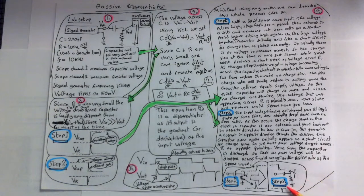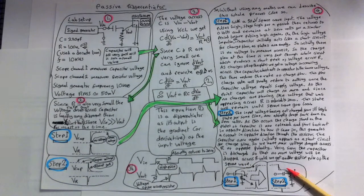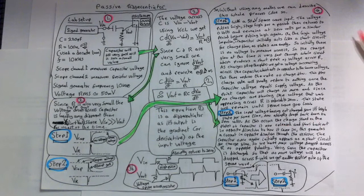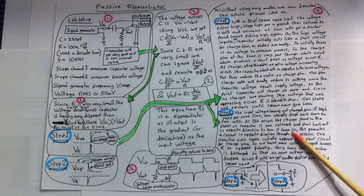Now step 2, the input voltage, having not changed from its high state for some time, now abruptly drops back down to 0 volts. As this occurs, the charge stored on the plates of the capacitor is now released and flows back out in opposite direction to how it came in.